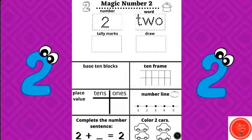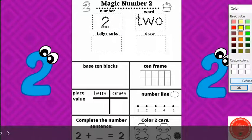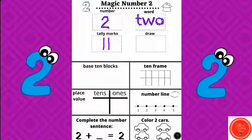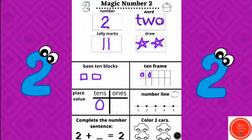Let's write. We're working with the magic number two. We're going to trace the number, trace the word T-W-O, and do tally marks — one, two. Can you draw two objects? You can do this on your paper or on your whiteboard. I'm going to make two stars. Now I'm going to show the number two with base ten blocks. On the ten frame, place value — the number two doesn't have any tens, but it has two ones.